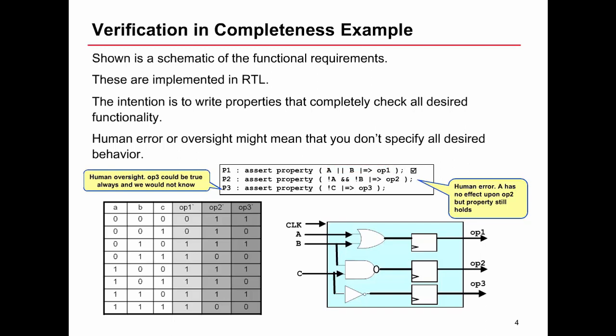If we were to write these properties here, we can see that the first one says if I have A or B, this implies the next cycle OP1 should be true. In the next property, whether it be an oversight or copy-paste error, we've made a mistake. The property says if not A and not B, this implies that OP2 is true the next cycle. Unluckily for us, what will happen is that assertion will always pass even though if we look at the inputs to the design, A cannot affect the output OP2. But if we look at the truth table to the left, it just so happens that any operation of that circuit will mean that property will pass.